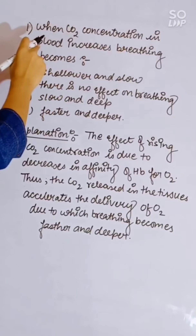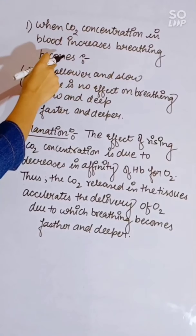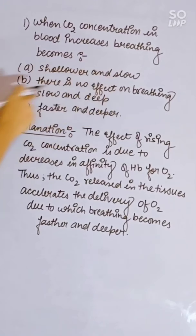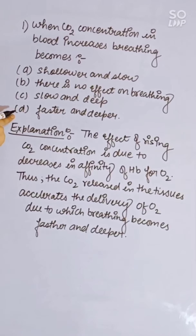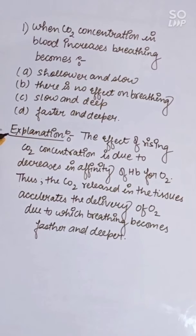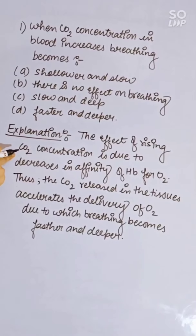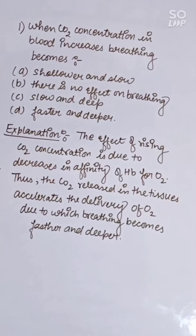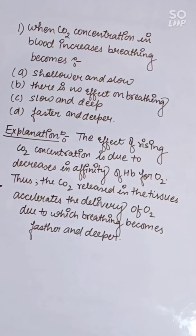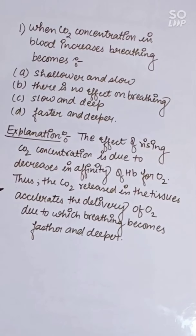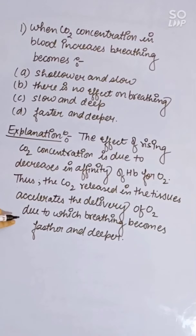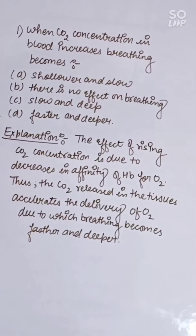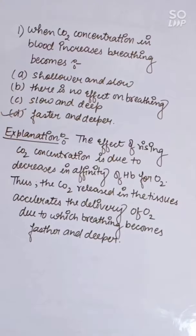When CO2 concentration in blood increases, breathing becomes: slower and shallow; no effect; slow and deep; or faster and deeper. The rising CO2 concentration decreases the affinity of hemoglobin for O2, and CO2 released in tissues accelerates O2 delivery, causing breathing to become faster and deeper. Correct answer is D.